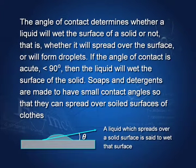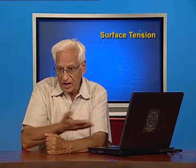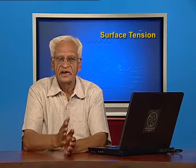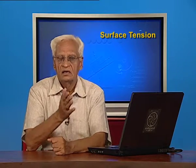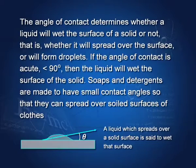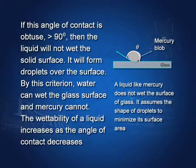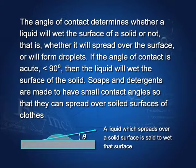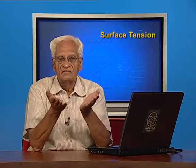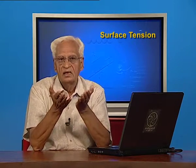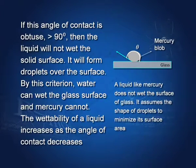The angle of contact determines whether a liquid will wet a surface or not. If water is able to spread on glass, it will wet it. If the angle of contact is less than 90 degrees, it will wet, and it will wet more if the angle is smaller. If the angle of contact is larger than 90 degrees, it will not spread on the solid and therefore it will not wet. In the case of mercury, it is more than 90 degrees and therefore mercury will not wet.